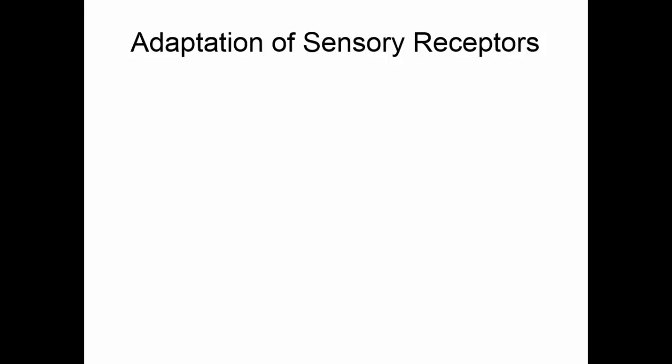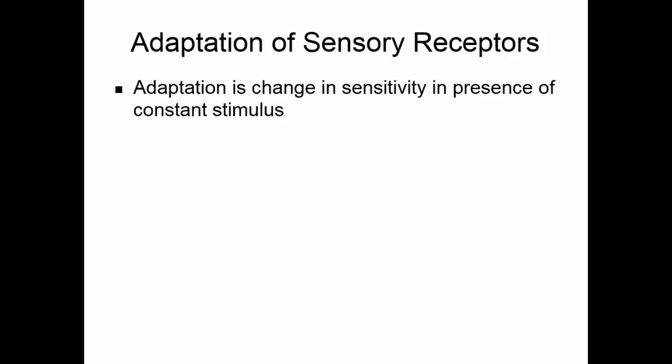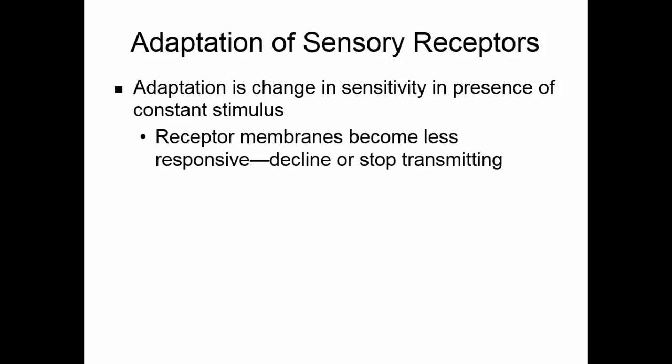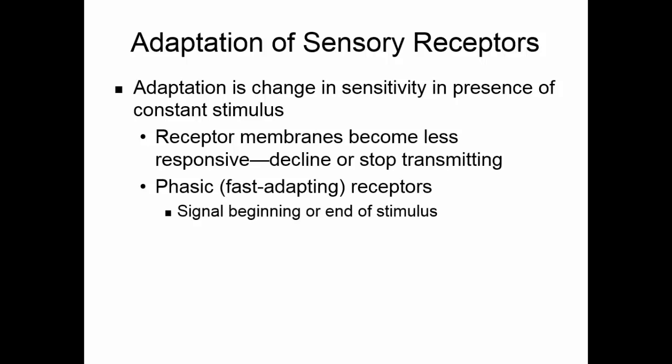Sensory receptors will undergo adaptation — a phenomenon where the receptor becomes less sensitive to the stimulus and may even stop responding entirely. As the receptor membranes become less responsive, they decline or stop transmitting. Some receptors are phasic receptors; they adapt very quickly. They signal the beginning or end of a stimulus, but while the stimulus is constantly applied, you don't particularly pick up on it. Receptors for pressure, touch, and smell are phasic. You put on clothes in the morning and feel the pressure momentarily, but then you start ignoring it — that's the adaptation of those pressure receptors.